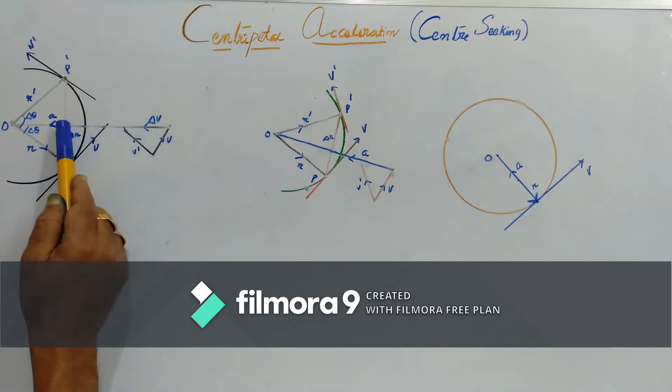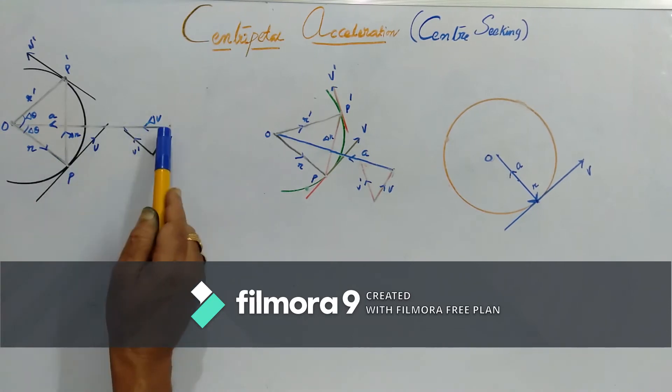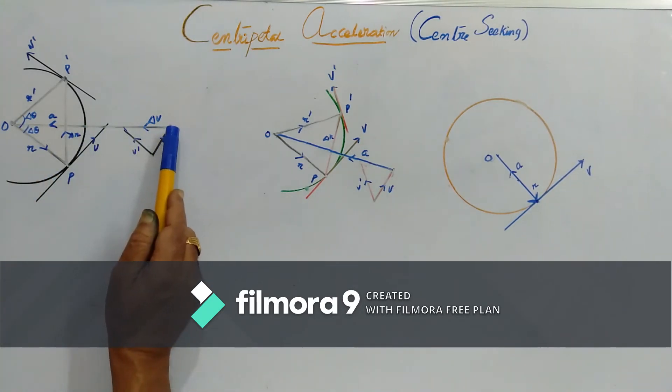A line which is perpendicular to this chord and at the same time it is bisecting this angle must be passing through the center of the circle.